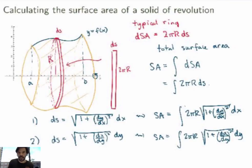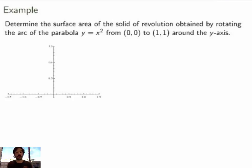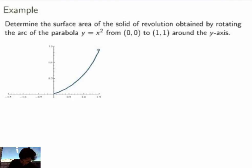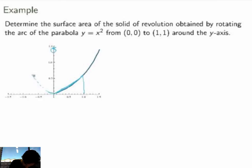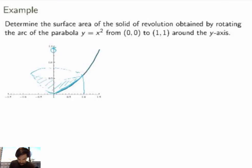Let me do an example to clarify. Suppose I ask you to determine the surface area of the solid of revolution obtained by rotating the arc of the parabola y = x² from 0 to 1 around the y-axis. The parabola looks like this; I'm only looking at it between 0 and 1, and I rotate it around the y-axis to get the solid. I'll do the calculation in terms of the x coordinate in this video.